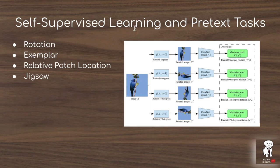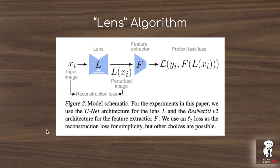The problem with some of these self-supervised learning tasks, especially in vision, is that instead of learning that this is the bird's head and looking at how the bird's head is turned to predict the rotation angle, what actually happens is that vision models learn to exploit low-level features like chromatic aberrations or miscellaneous nuances in the image that allow them to solve the rotation task without actually forming a useful representation to transfer to something like ImageNet classification.